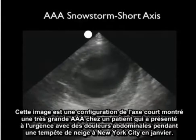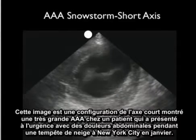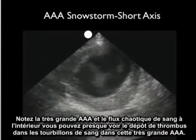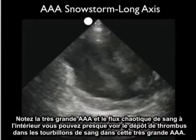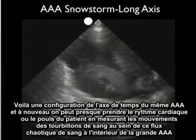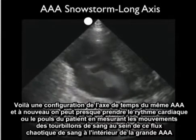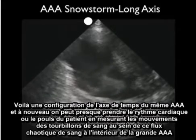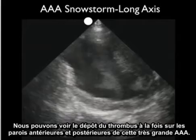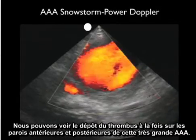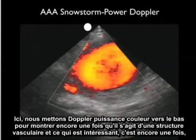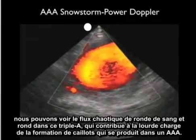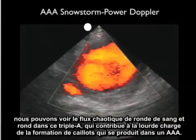This image is a short axis configuration showing an extremely large triple A in a patient who presented to the ED with abdominal pain during a snowstorm in New York City in January. Notice the very large triple A and the chaotic flow of blood inside — you can almost see the thrombus deposition from the swirls of blood. Here's a long axis configuration of the same triple A, and we can almost take the patient's pulse by measuring the movements of the swirls of blood within this chaotic flow. We can see the deposition of thrombus on both the anterior and posterior walls. Color power Doppler again confirms this is a vascular structure, and shows the chaotic flow of blood contributing to the substantial burden of clot formation.